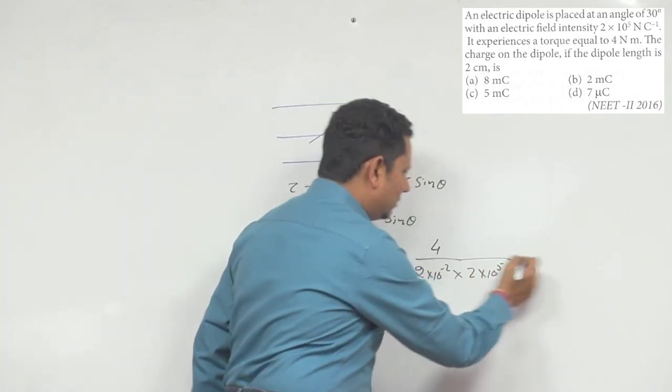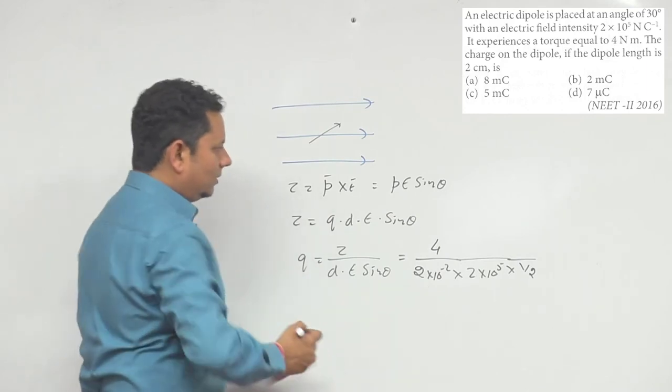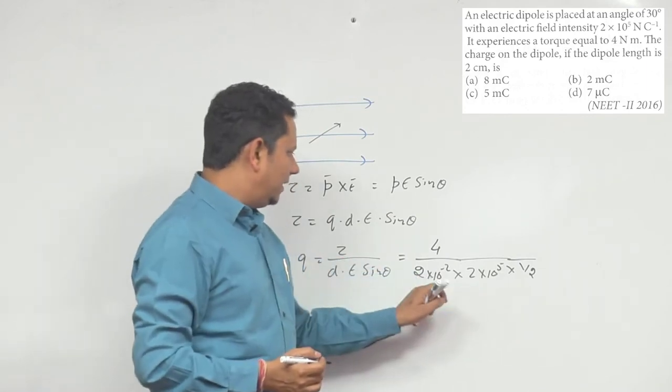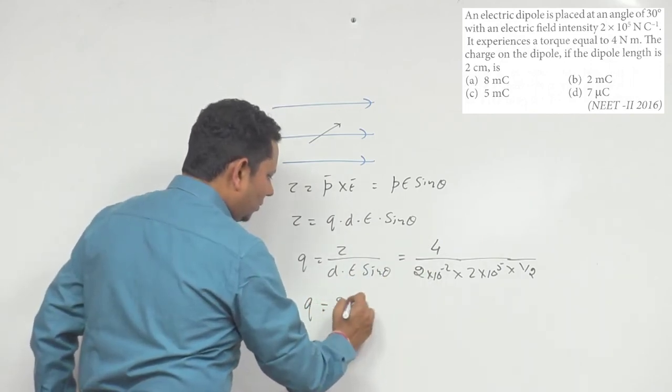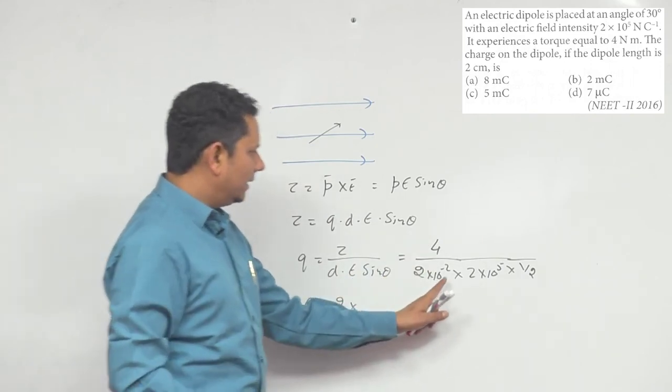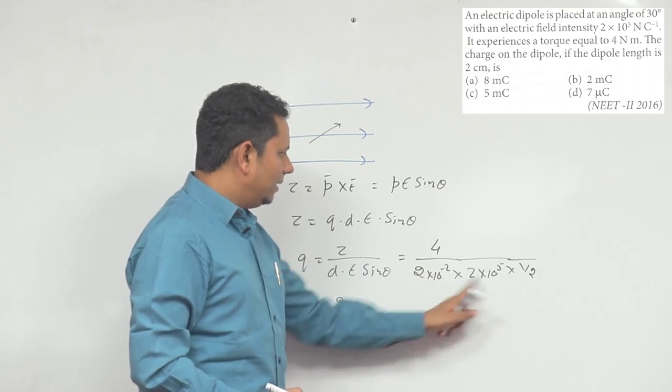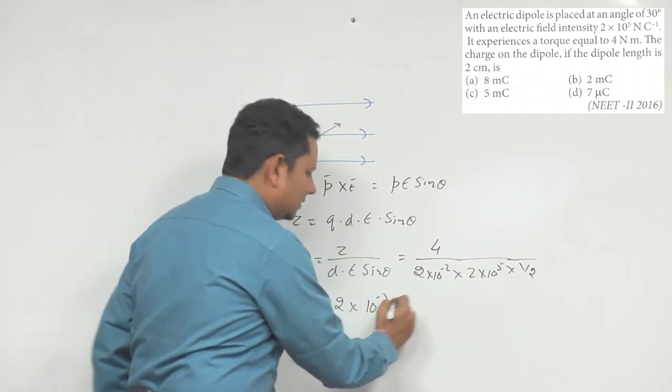So solving this, we get our value. This 2 cancels with that 2, and from this 2, 2 remains on top. So q equals 2 multiplied by 10 to the power minus 3, which is 2×10^-3.